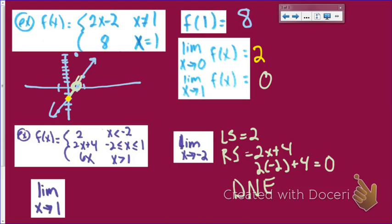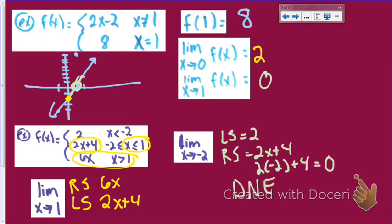For the limit as x approaches 1: on the right side I use the function 6x, and on the left side I use the other function. Plugging 1 into the right function gives 6, and plugging 1 into the left function also gives 6. Since both sides approach the same value, the limit exists and equals 6.